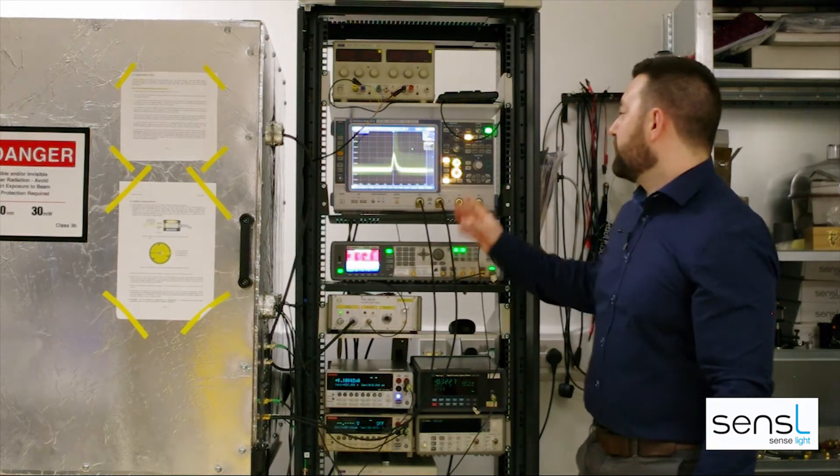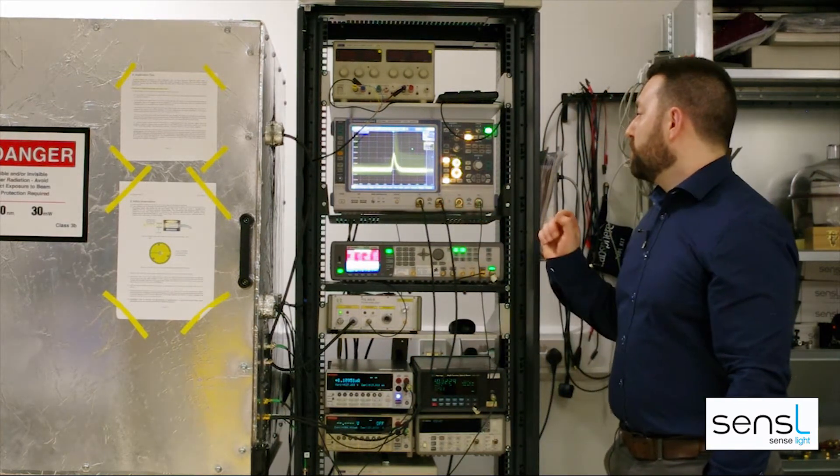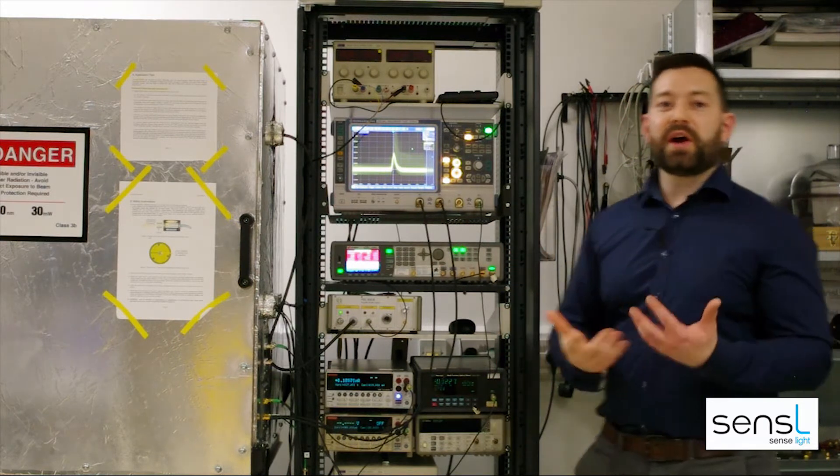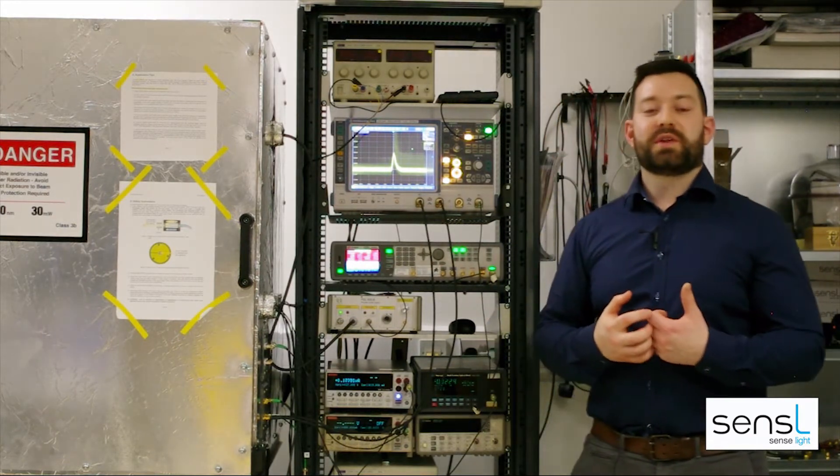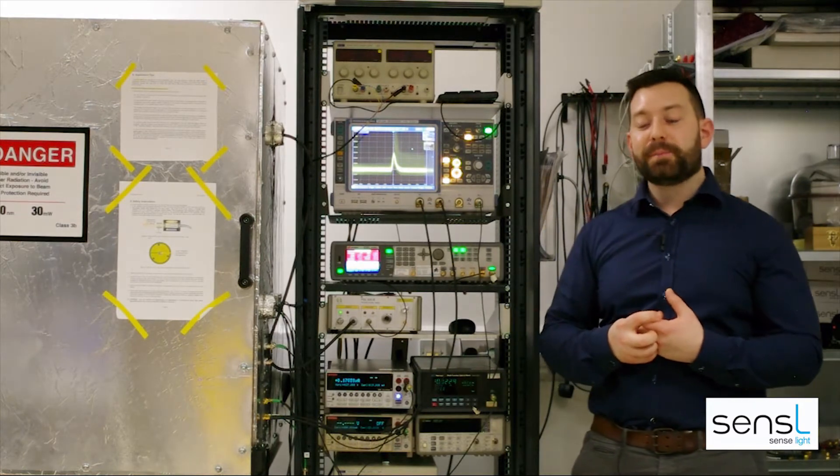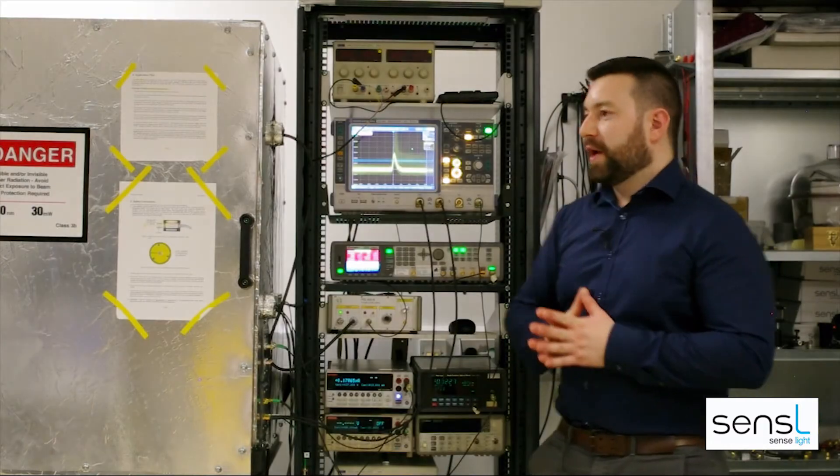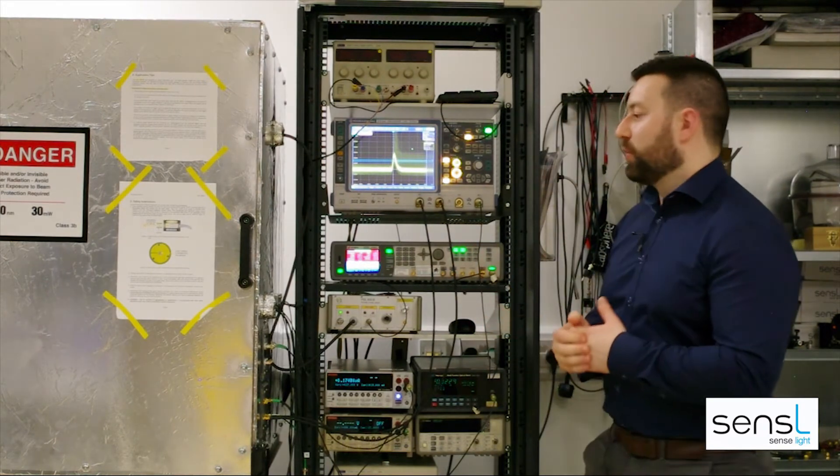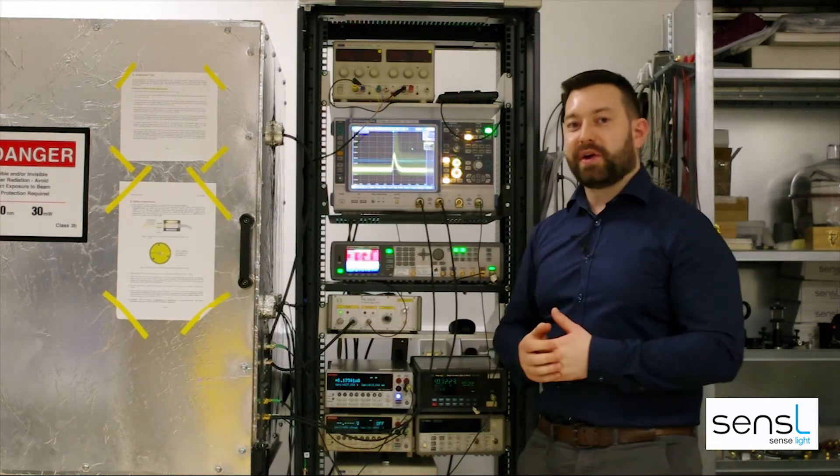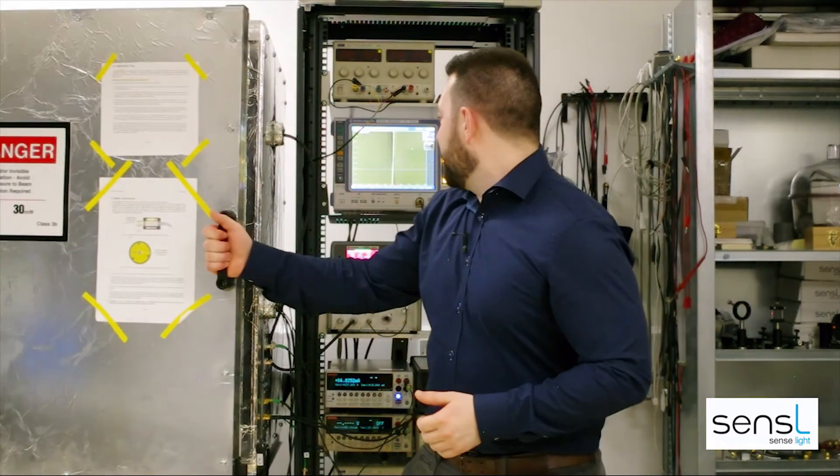When I turn on the supply, we can see the response to a dark pulse. A dark pulse is the result of a thermally generated electron within the SIPM causing a single micro cell to fire. To ensure that you can measure this signal, your dark box needs to be completely light tight. If it's not light tight, this is what you will see.